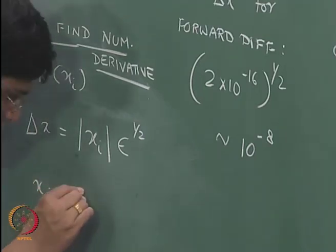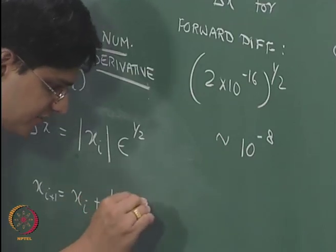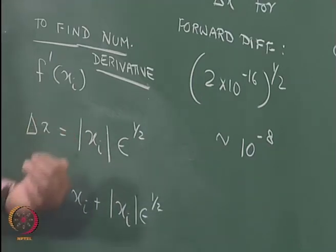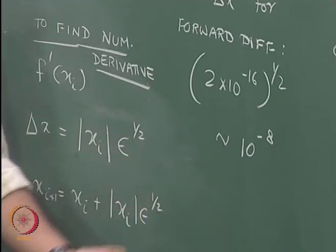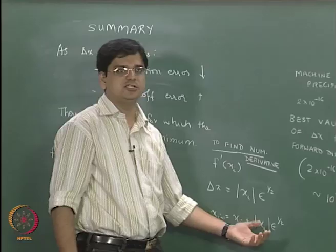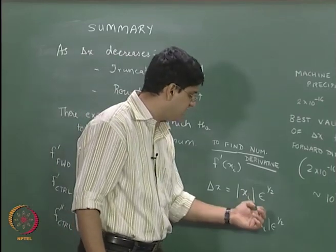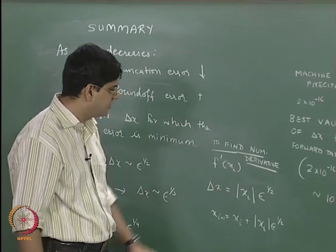...which is going to be equal to x_i epsilon to the power half. So, if x_i is positive, then x_{i+1} is going to be equal to x_i multiplied by 1 plus epsilon to the power half. So, that is the choice that you need to take with respect to what delta x you will choose for getting the numerical derivative.